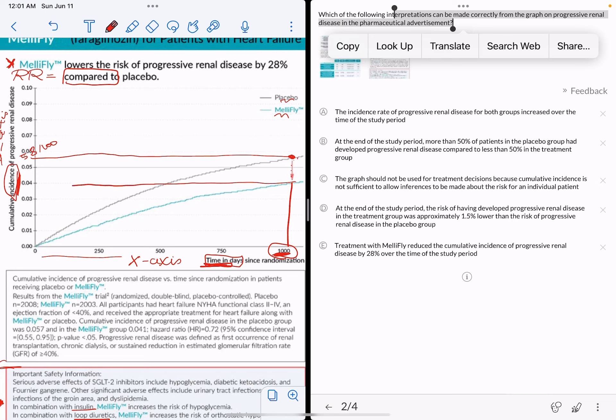And with MelliFly, on the other hand, by 1,000 days it was 0.04, which is 4 out of 100, so 40 out of 1000. Obviously, there was around 18 people different per thousand, and 18 per thousand is around 1.8 per 100—1.8% absolute risk reduction, right?